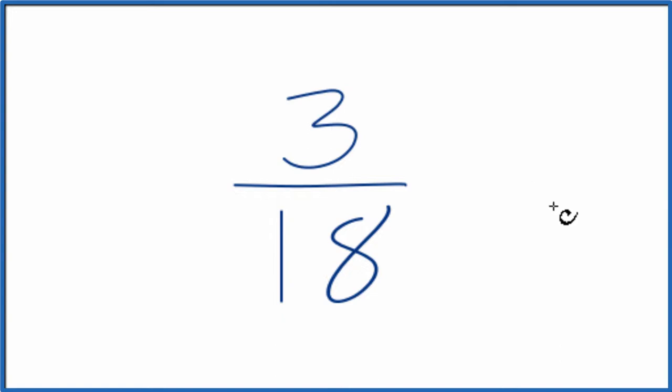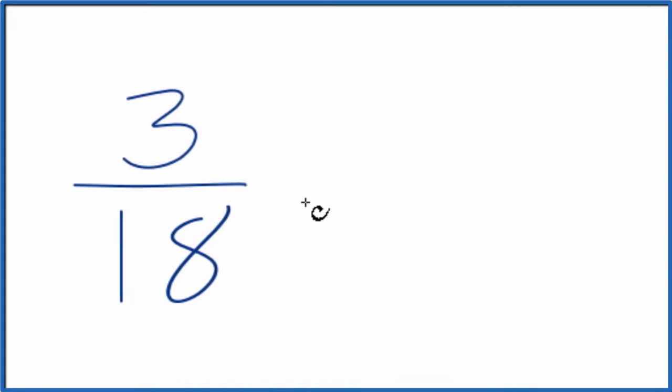To do that, we need to find a factor, a common factor that goes into 3 and 18. So we could think of it this way.